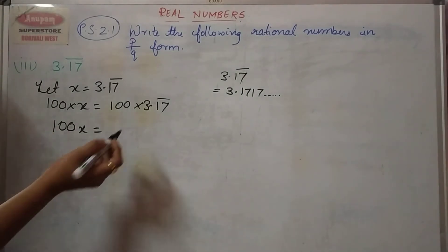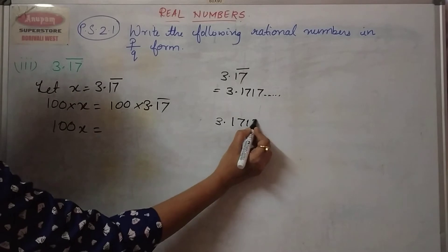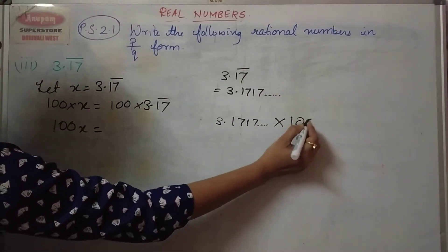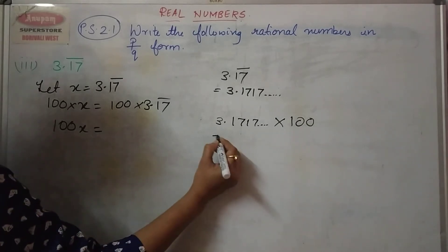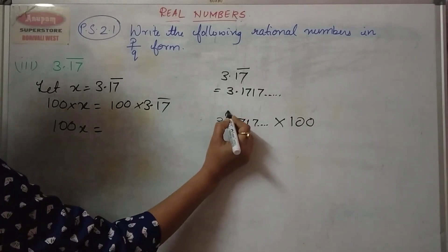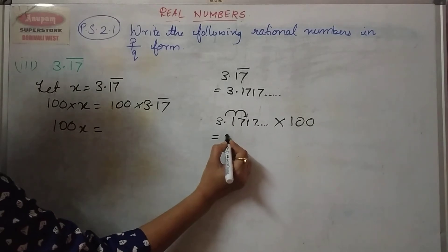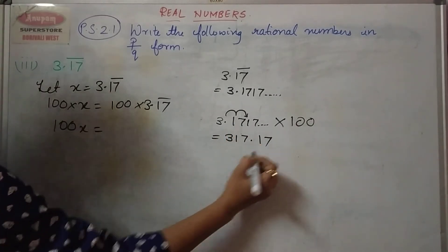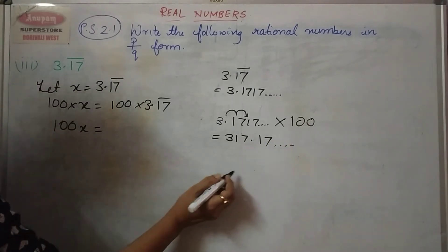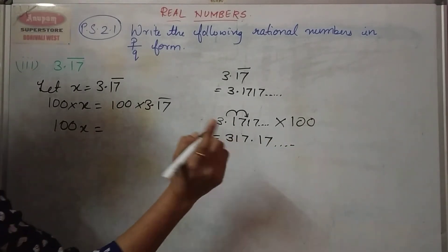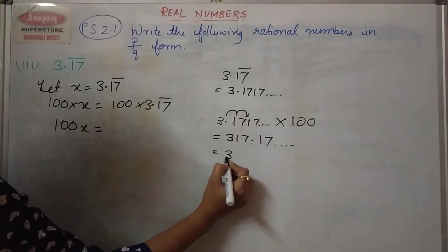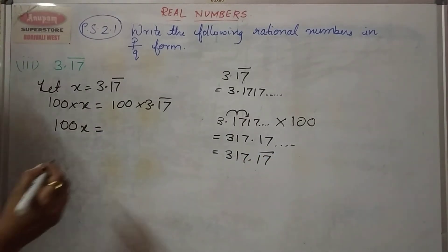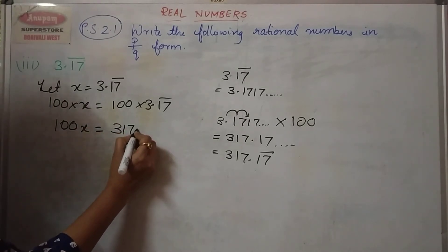Now I am going to multiply 3.1717 by 100. Since I have 2 zeros, the decimal point shifts by 2 places, and therefore my answer will be 317.17 bar. So you get 317.17 bar here.